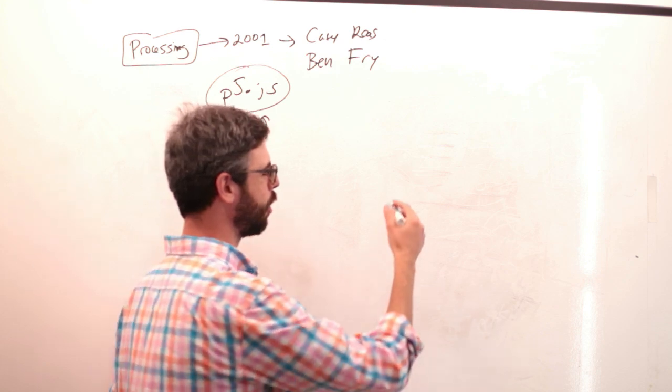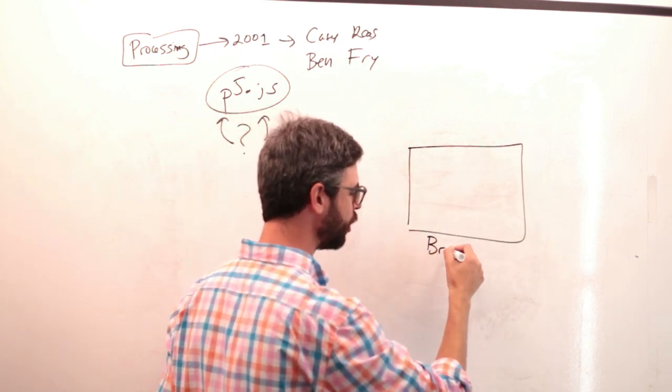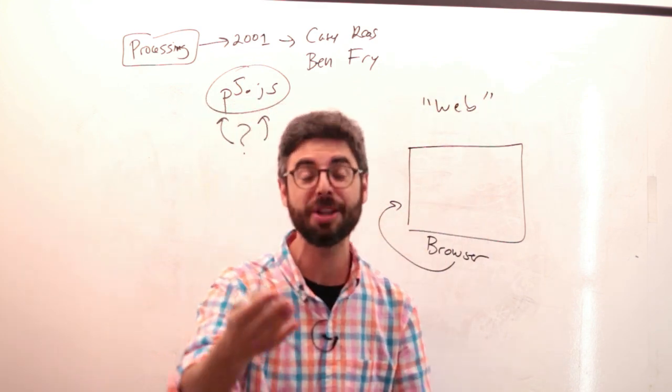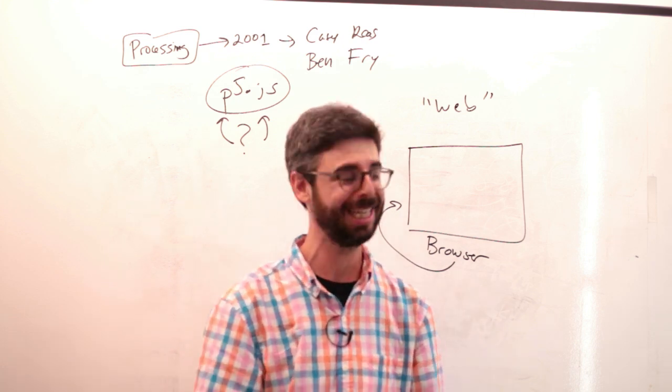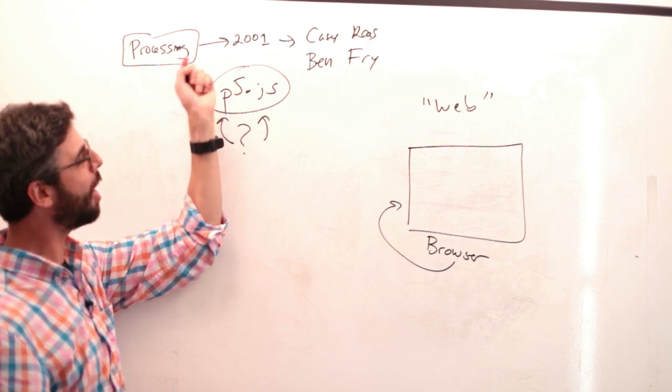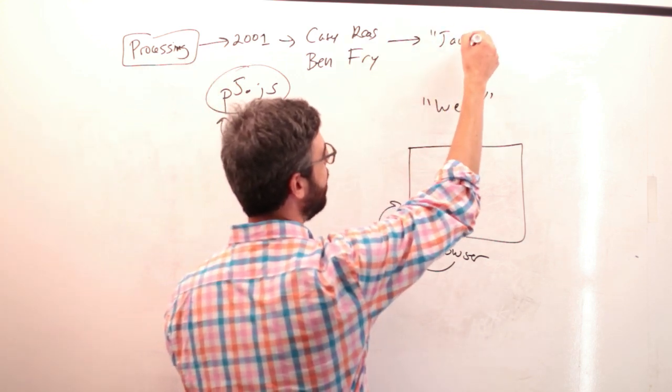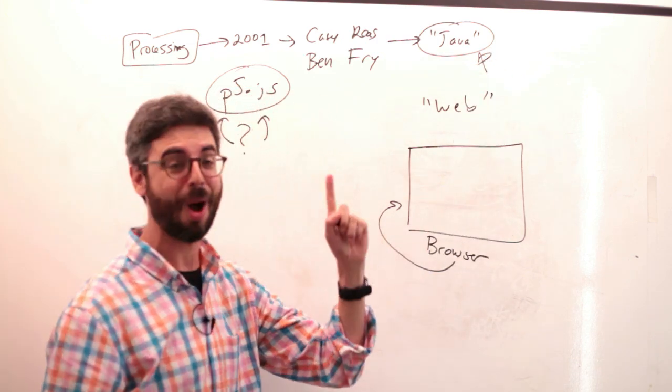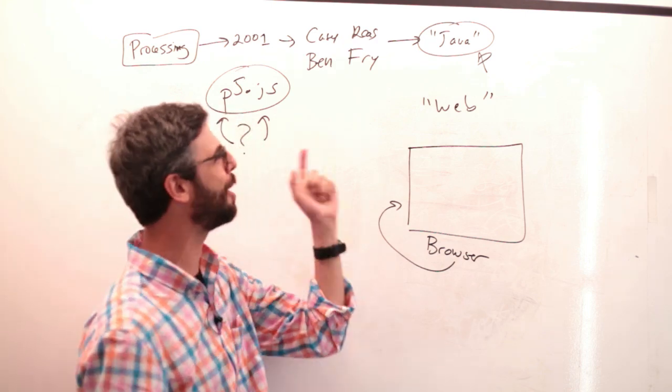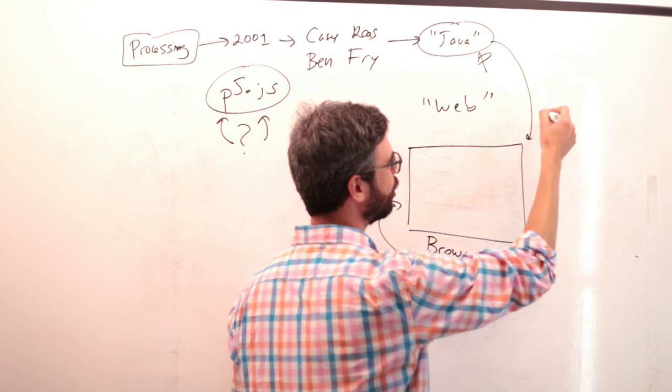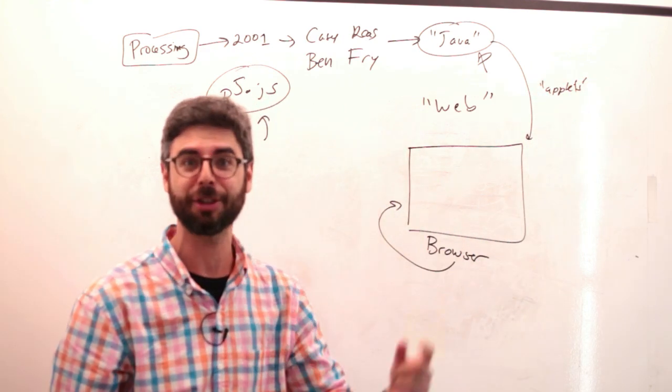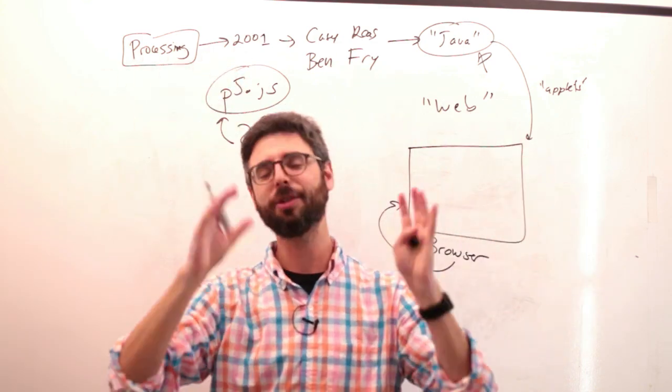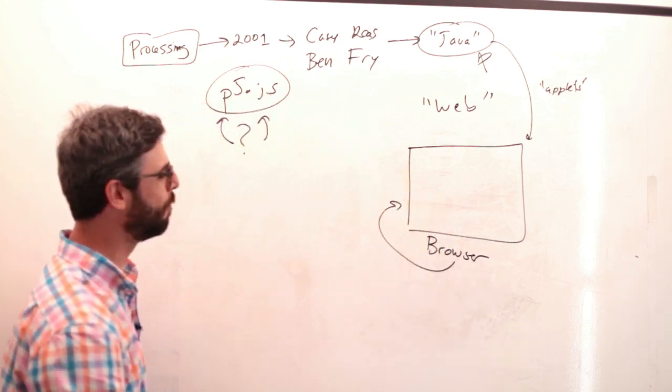Also, learning to program and have the results of what you program go in a browser on the web so that other people can see those things, that you can share and distribute easily, this is a very powerful thing. So interestingly enough, processing when it was first created was built on top of a programming language called Java, which was all the rage back in 2001. One of the reasons why processing used Java is that you can make these things called applets. Applets would run in the web browser so you could program your thing in processing, upload it to the web, distribute it, all the world would see it and become rich and famous, or even better you do something good for the world.